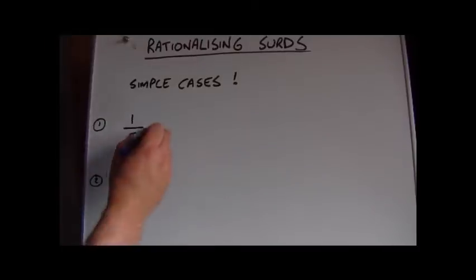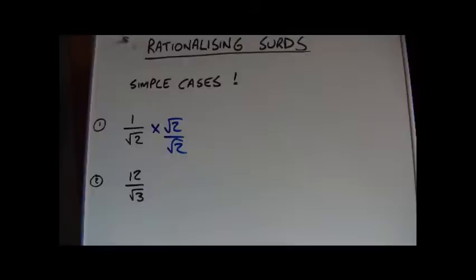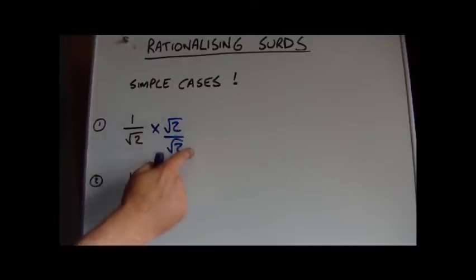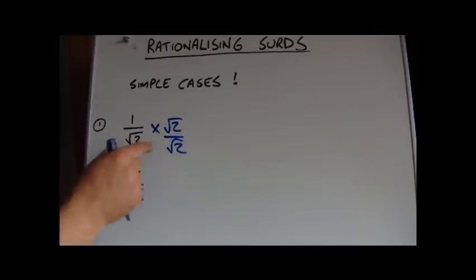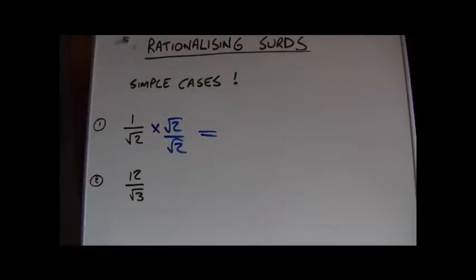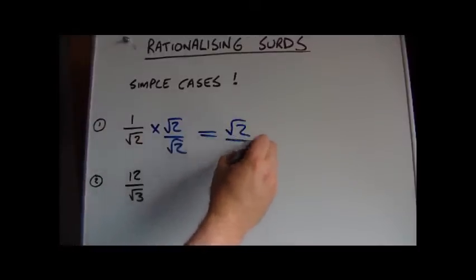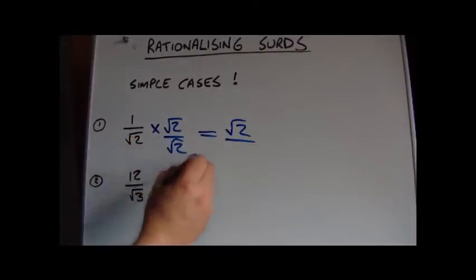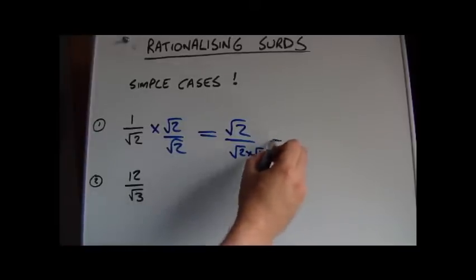In these simple examples, because we just have a single term on the bottom, we're going to multiply by a new fraction. That new fraction is made up of the bottom term — so we're writing root 2 over root 2 — and since its value is just 1, we're not changing the value of the original expression, just what it looks like. So on the top we get 1 times root 2, and on the bottom we've got root 2 times root 2.